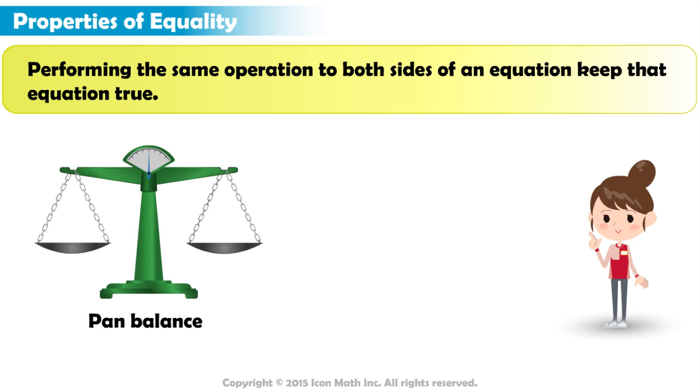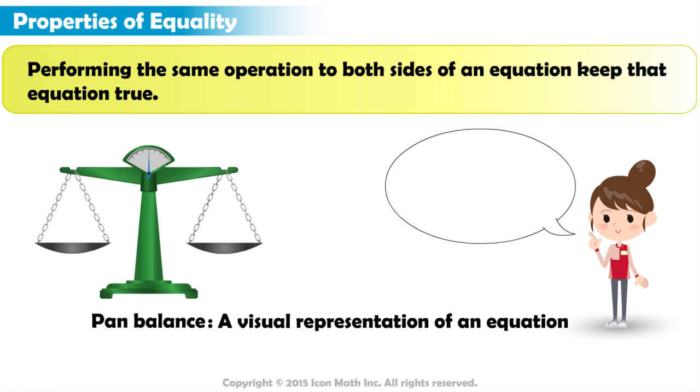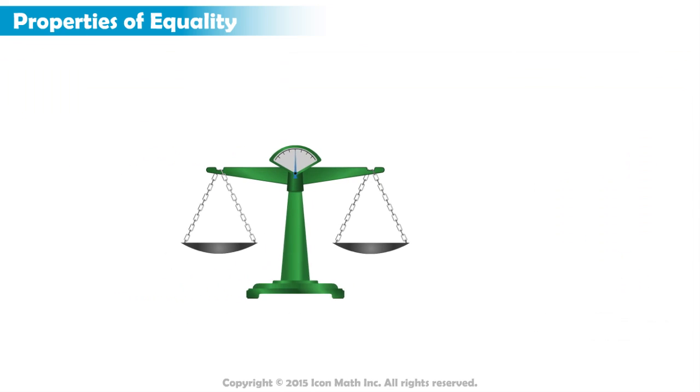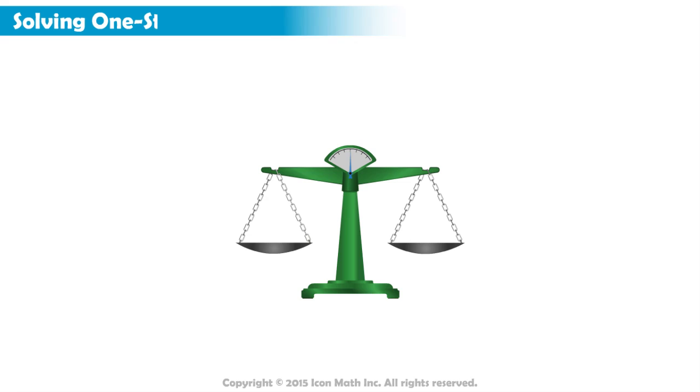We also learned that a pan balance is a visual representation of an equation, where the pan balance remains level when the equation is true. Now, we will learn how to solve a one-step equation using a pan balance.